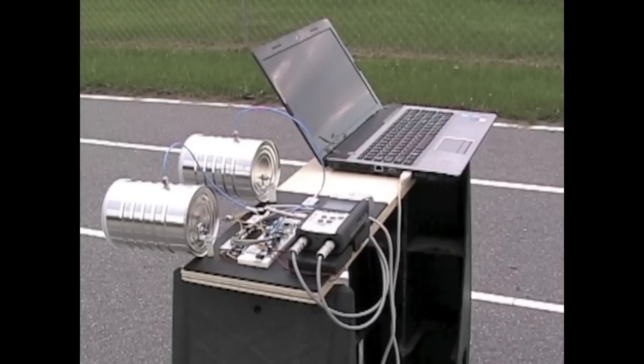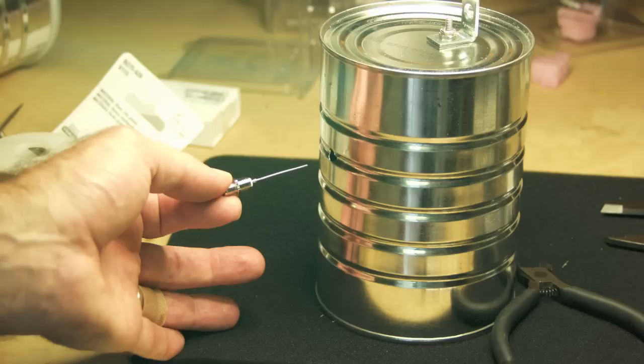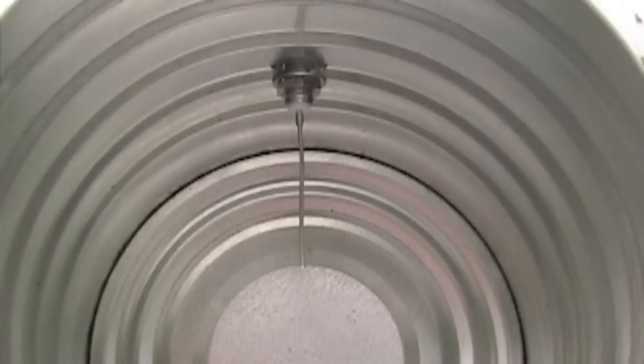While we're waiting for my laptop to process the data I just collected, let me give you a little bit of a close-in tour. As you can see, we have a couple of generic coffee cans. Inside the coffee can is just a little wire, and that makes for our radar antenna.